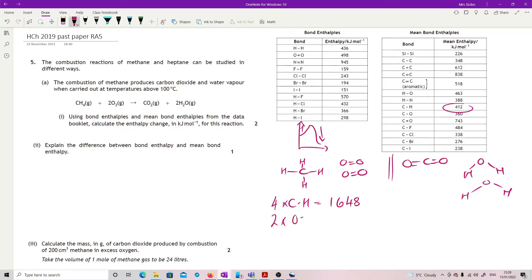I've got two O to O, O to O, O to O over here in the 498, so that's 996. It means that to break all those bonds I will require 2,644 kilojoules.